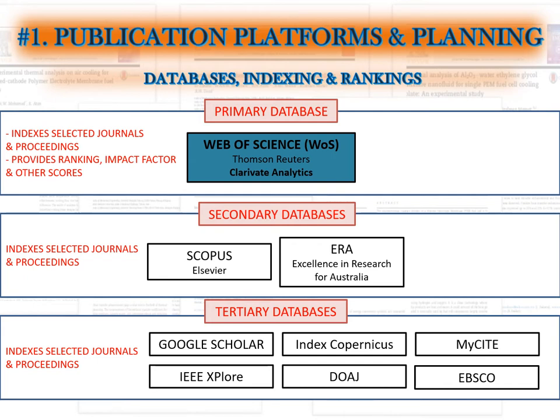The first subject matter is about publication platforms and planning. We must first understand the categories of databases. There are tertiary databases — usually Google Scholar, ITP Explore, Index Copernicus and so forth — which index selected journals and proceedings. Secondary databases consist normally of Scopus and ERA, which also index selected journals and proceedings.